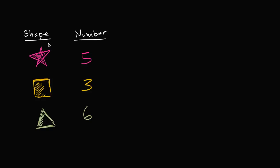You don't see them all here. This is just telling us how many of each of these shapes we have. So if we have five stars, three squares, and six triangles, how many total shapes do we have?